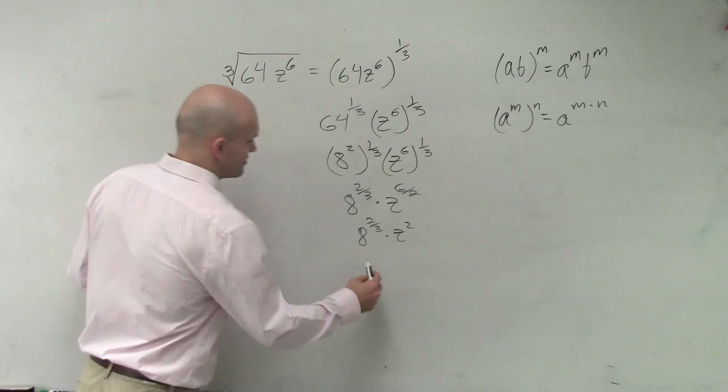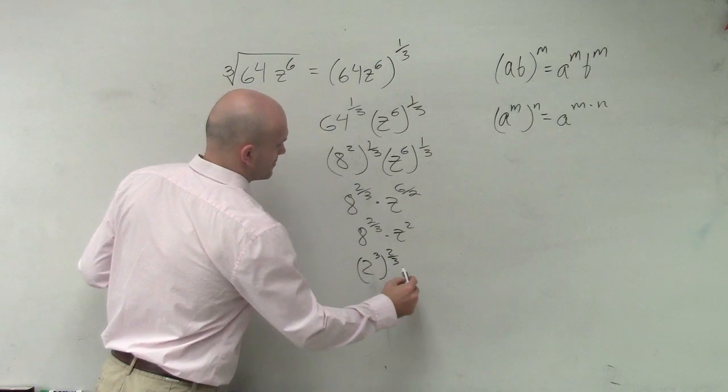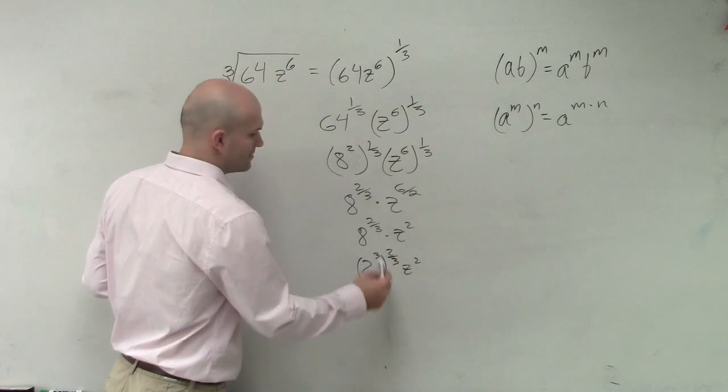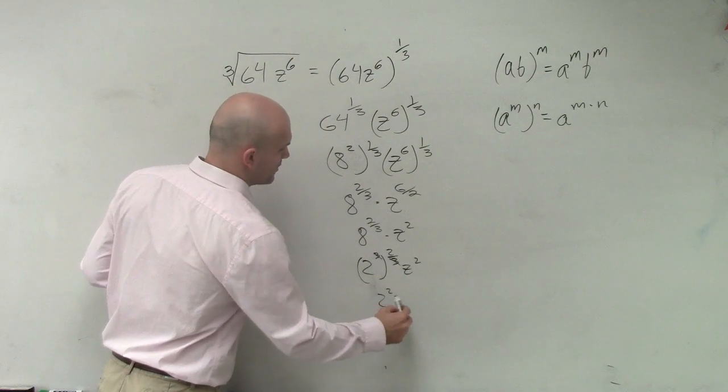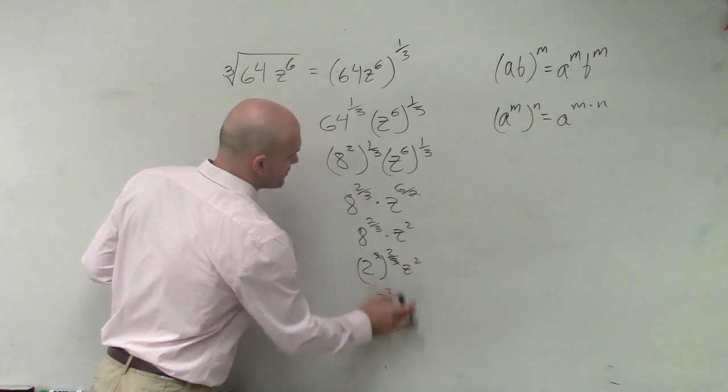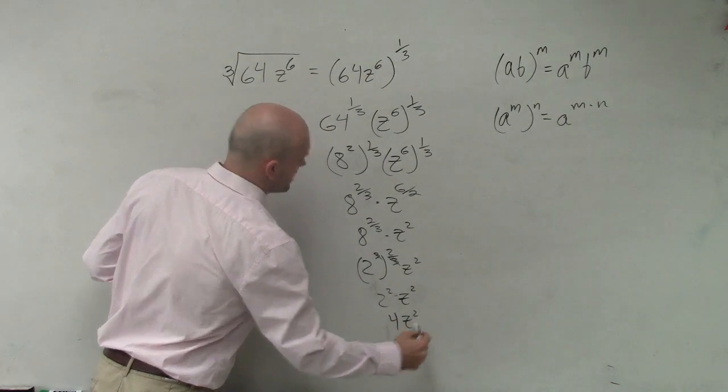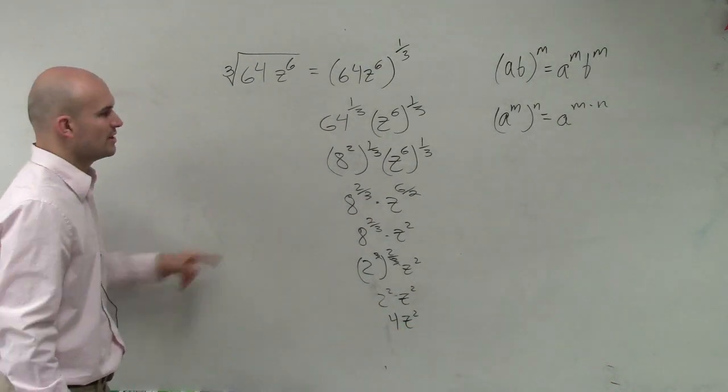2 cubed. So then you have to do it again, right? Which gives you 2 squared equals z. Oh, I'm sorry. 2 squared times z squared, which equals 4z squared. Now, let's go back up to this point again, to 64.